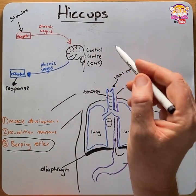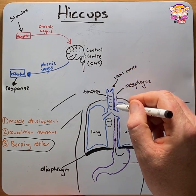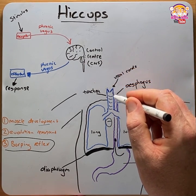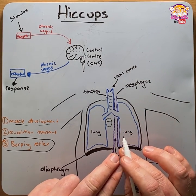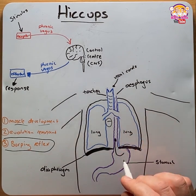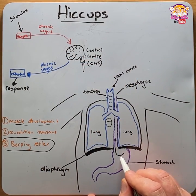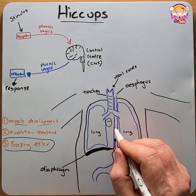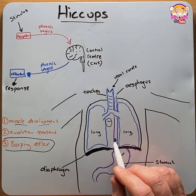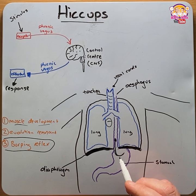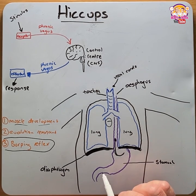Hiccups are most common in infants, most probably because as they ingest milk, they swallow a significant amount of air, which causes distention of the stomach and esophagus, activating the hiccup reflex. This brings air out of the stomach into the esophagus to be burped out, which helps remove swallowed air during suckling and therefore increases the capacity of the stomach for milk rather than air.